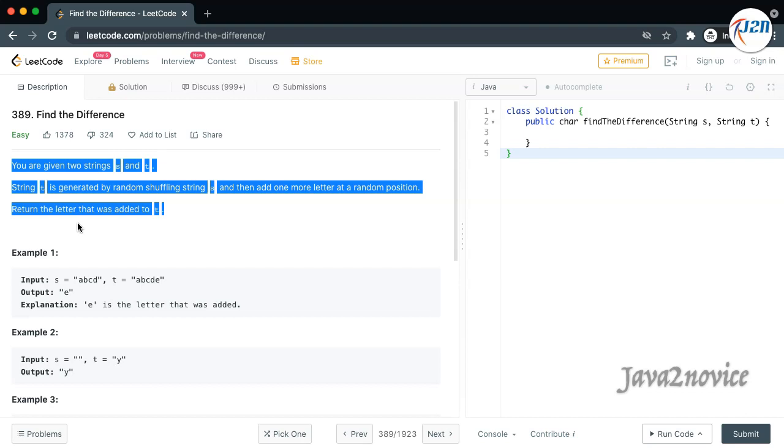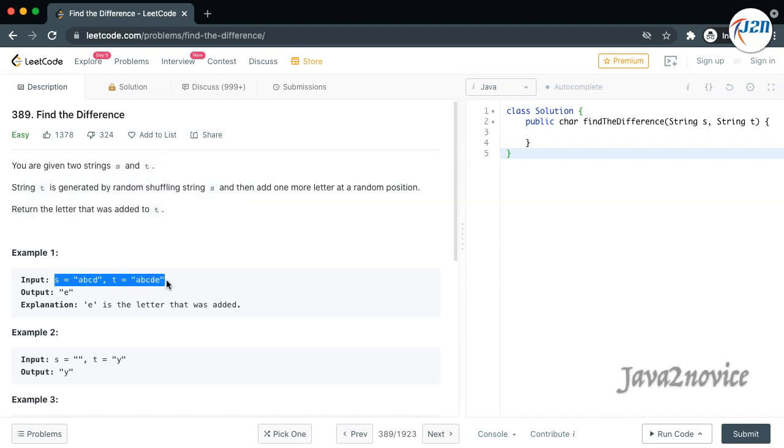Also, one more extra character will be added into string T at a random position. We need to find this extra character which is added into string T. Let's take this example. String T is generated out of string S. If you compare both strings, E is the extra character which is the output here.